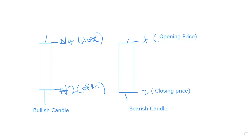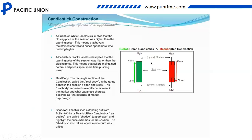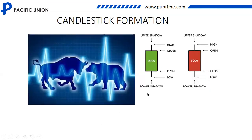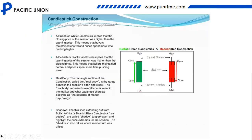The real body is the rectangular section of the candlestick — it is the distance between the open session and the closed session. The real body represents overall commitment in the market and what Japanese traders discovered as the essence of market psychology. If you want to understand the candlestick pattern well, you need to identify and compare the strength of the body and the shadow together. The body is the distance between the open price and the close price — that is the real body.